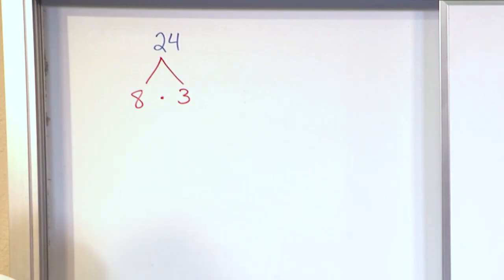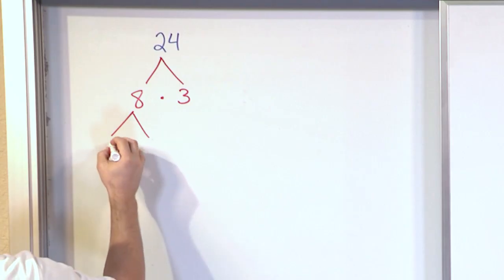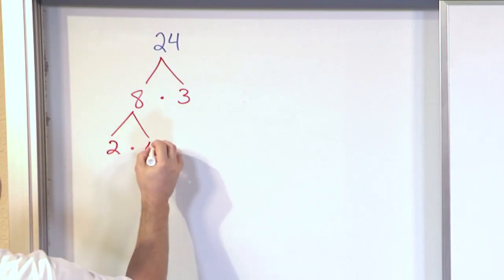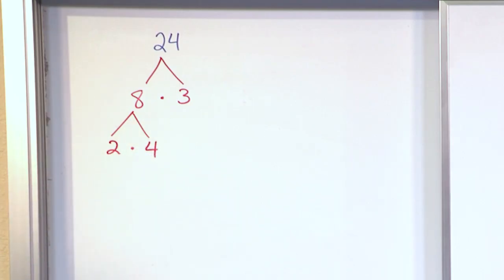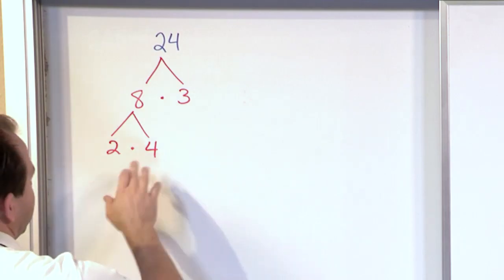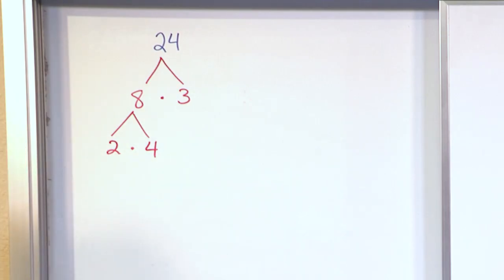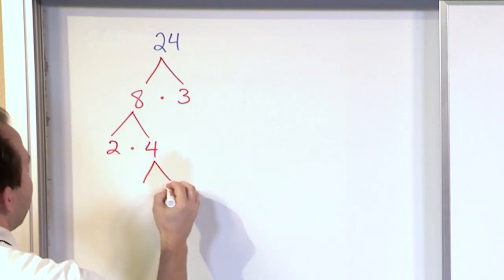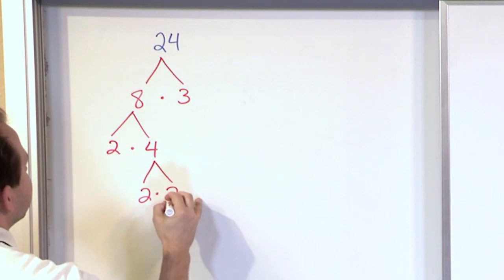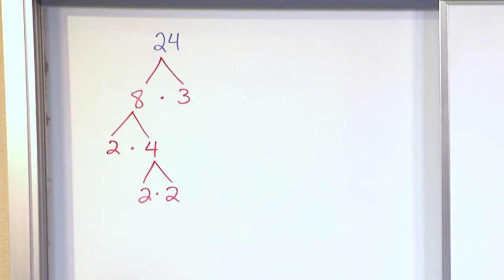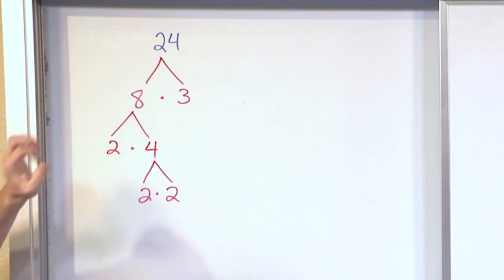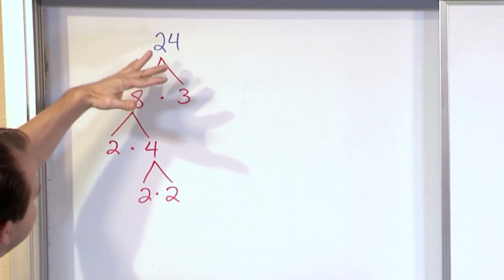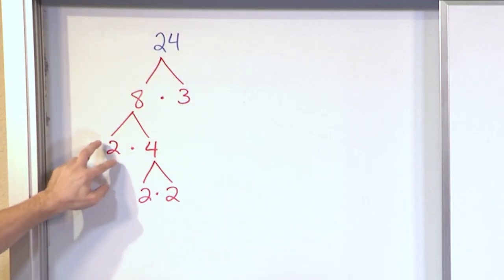Now the next thing you do is you look at 8. Let's go with 2 times 4, because 2 times 4 gives me 8. Now let's look at the 4 down here. Do I have any two numbers that can multiply together to give me 4? Of course — I have 2 times 2. 2 times 2 gives me 4. Now what we have is we've built a factor tree and at the very bottom of this tree is what we're interested in.